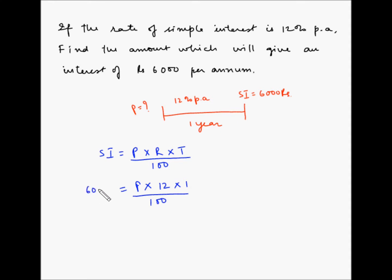Simple interest is 6000, so let's bring this 100 on the other side and this 12 also on the other side so that we have only P on one side and all the numbers on the other side. So P is equal to 6000 multiplied by 100 divided by 12. Let's divide 6000 and 12 both by 6.